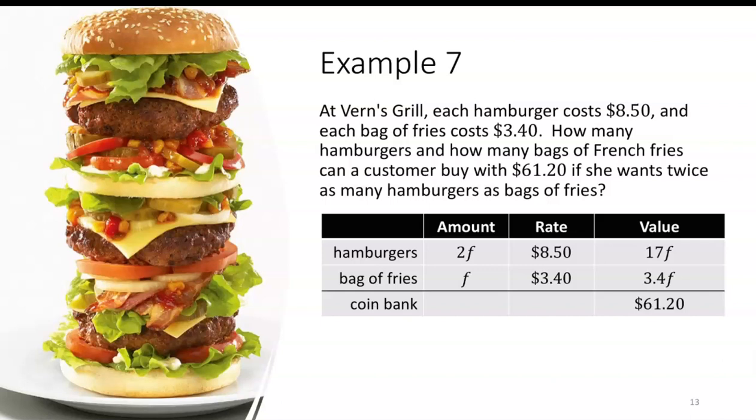So in this case here, she wants twice as many hamburgers as fries, so if I let fries be F, then the number of hamburgers would be 2 times F. For the rate, I know it's $8.50 per hamburger, so I put $8.50 for the rate for hamburgers and $3.40 for the bags of fries.